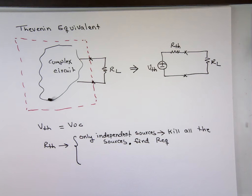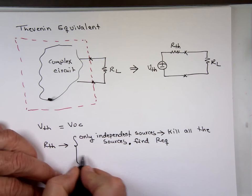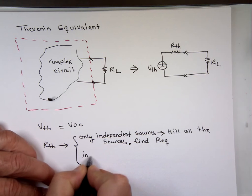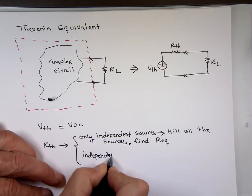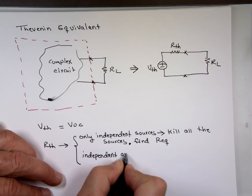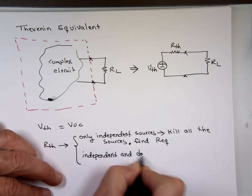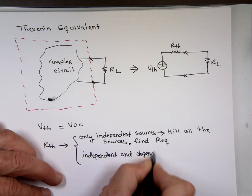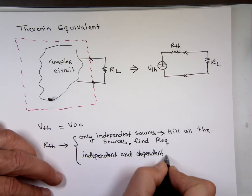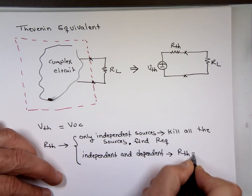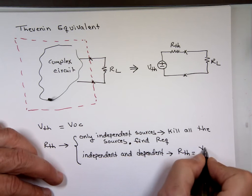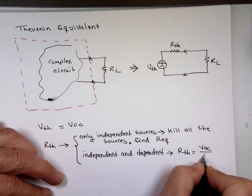If your circuit has independent and dependent, the way we find R-Thevenin is actually V open circuit over I short circuit.